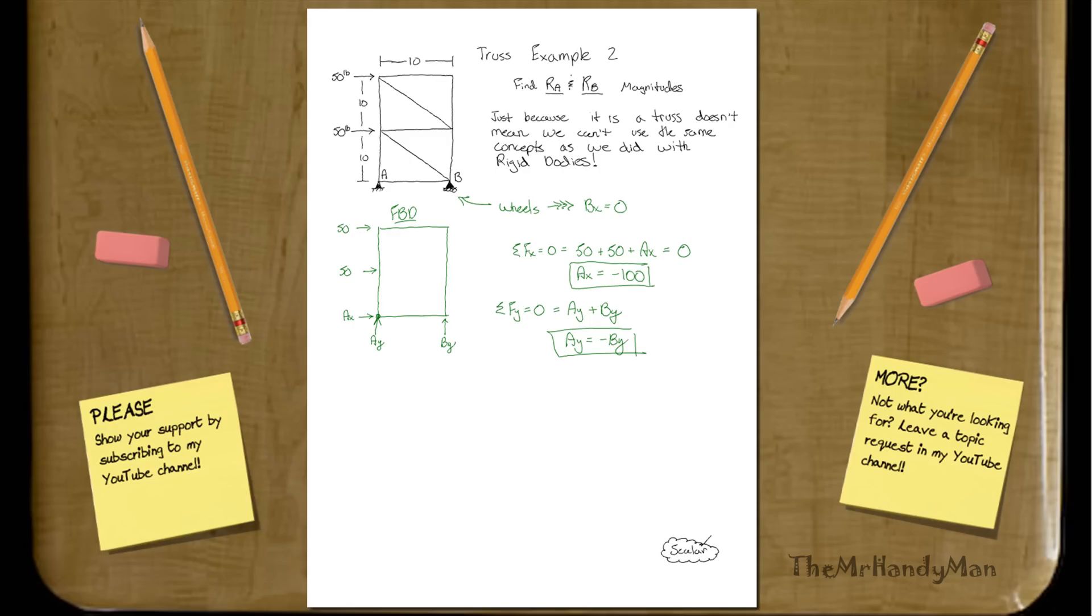So this is where the moment will come in. We can say the sum of the moments at, let's just pick A because I see two forces at A and I can cancel two forces and not have to deal with them there. So moment at A, we will have, first of all, you can do both of the 50s. So I would do 50 times the arm length, 10.